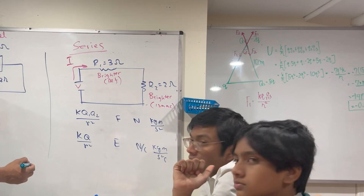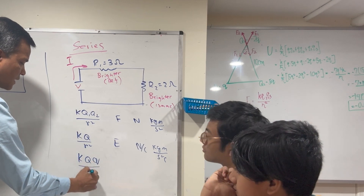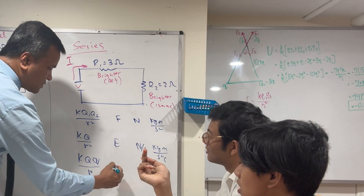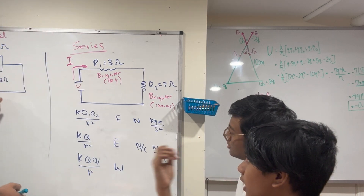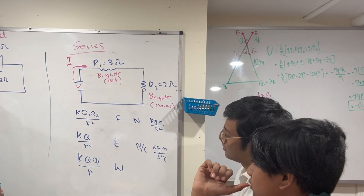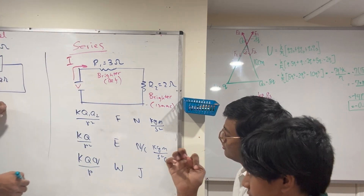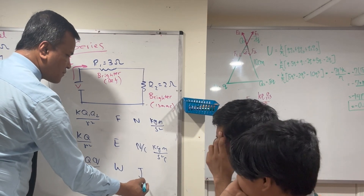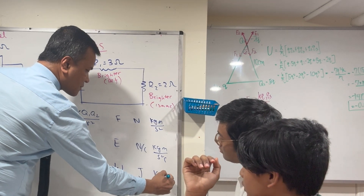Let's continue. K·Q·Q over R equals potential. What is the SI unit? Newton·meters — but most often we call it Joules. And the simplest form of Joules? Kilogram·meter squared per second squared. Good.